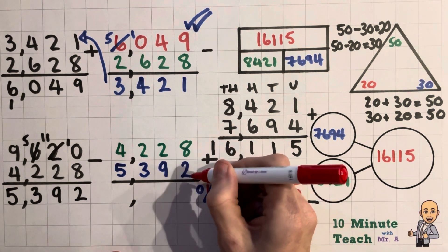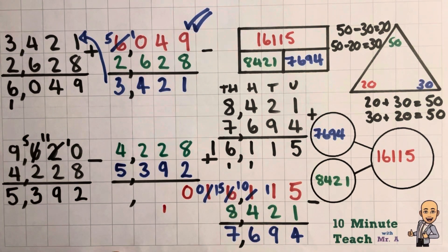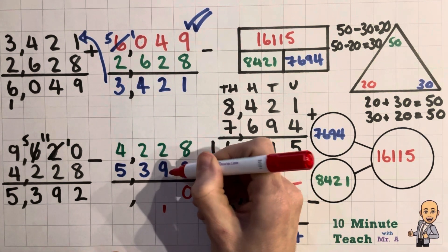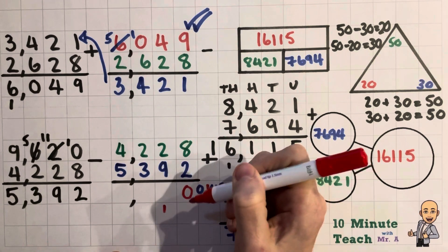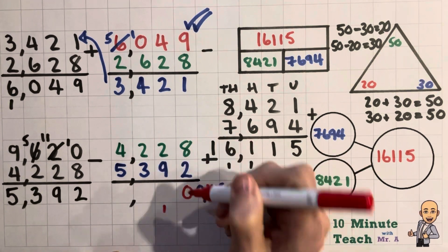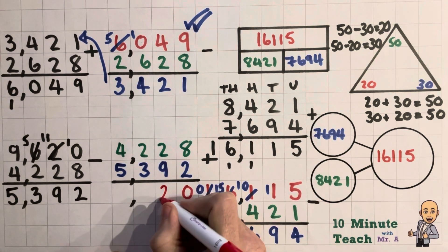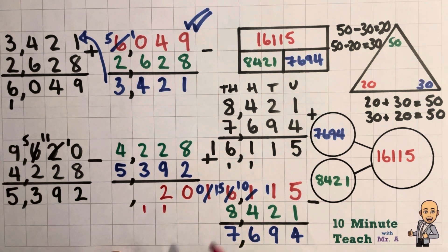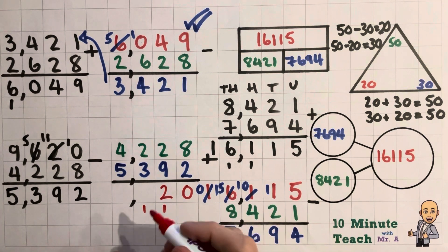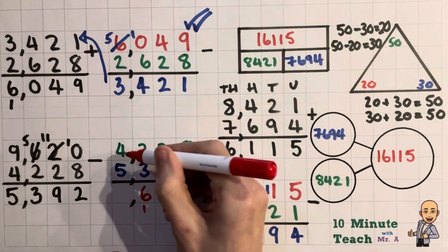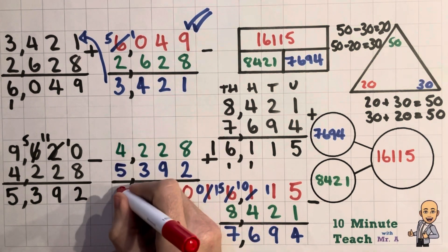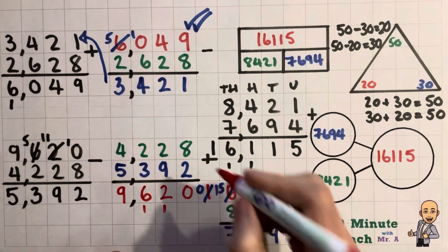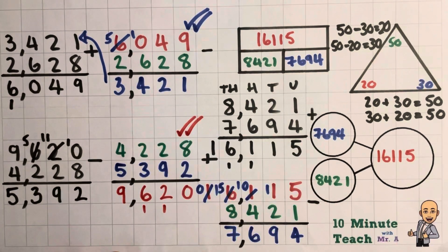So 8 add 2 is 10 and we carry over the 10. 2 add 9 or 20 add 90 is 11 or 110. Add an extra one for 120. 2 add 3 is 5 or 200 add 300 is 500. Add another 100 for 600. And 4,000 add 5,000 ends up with 9,000. And absolutely perfect. So we've got that one correct as well.